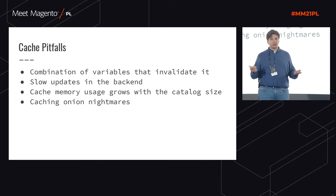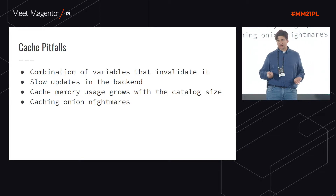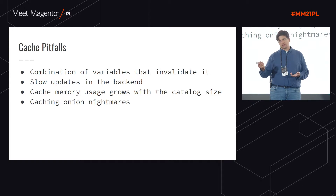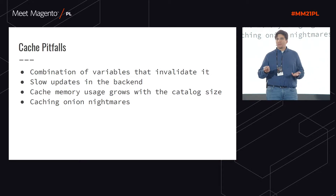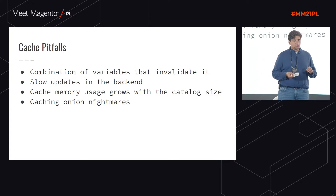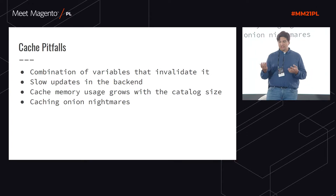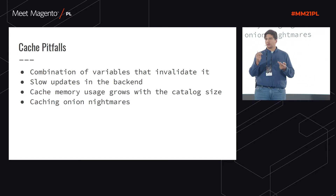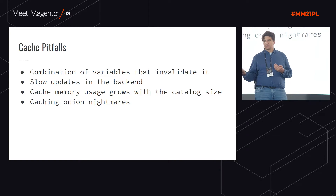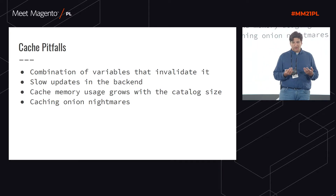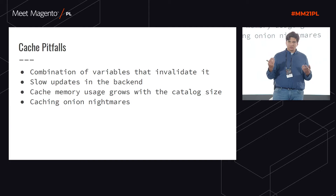For instance, I had a customer who just added some random parameter to a newsletter campaign, and instead of hitting a cached page of the product, they were hitting with 10,000 concurrent users uncached versions of the product — which basically made the website go down. A combination of variables like customer group, customer location, and language all affect our cache variations. So if you want pages to always be cached, you need to pre-warm those caches, and that's not easy to do.